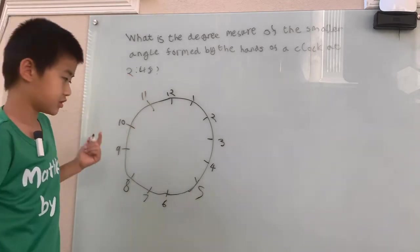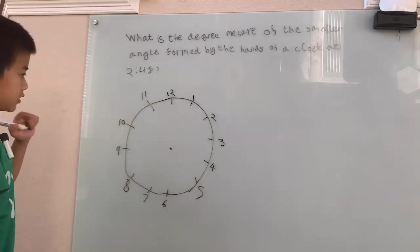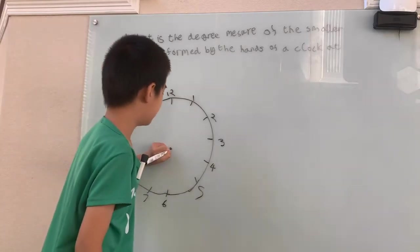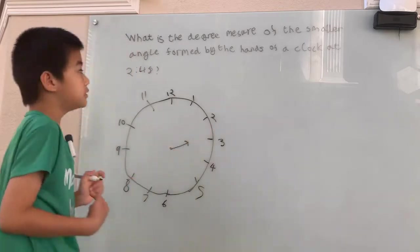Now, 2:48, we're going to draw that in as well. First, put in our origin of the circle. Let's see, 2:48, that's almost 3, means the hour hand's pointing somewhere like that, almost at the 3.